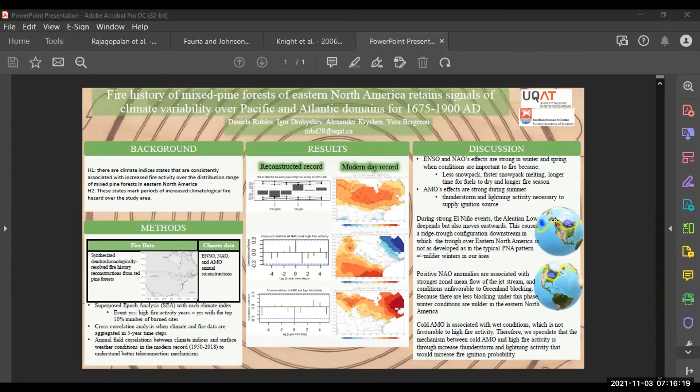So in the PNA pattern, there is a ridge in western Canada, and there is a trough in southeast United States. So we expect that when El Niño events occur, the jet stream is going to meander really south in eastern North America. And this would allow a cold air intrusion from the Arctic to penetrate into our area and cause cold winters, which is not fire prone.